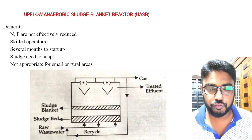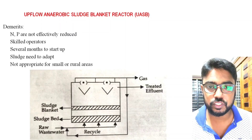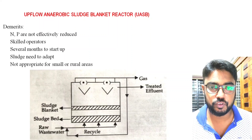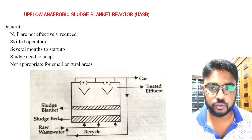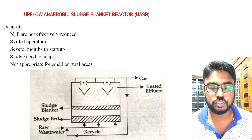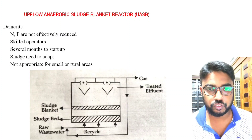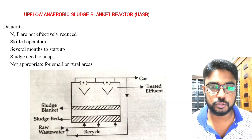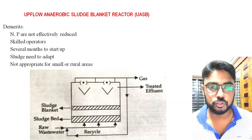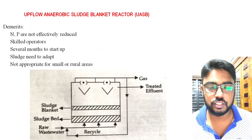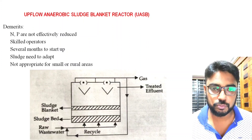There are some drawbacks of the upflow anaerobic sludge blanket. Nitrogen and phosphorus cannot be fully removed by this method. It needs a skilled operator to operate this instrument. The upflow anaerobic sludge blanket needs several months to start up. And it is not appropriate for small and rural areas.